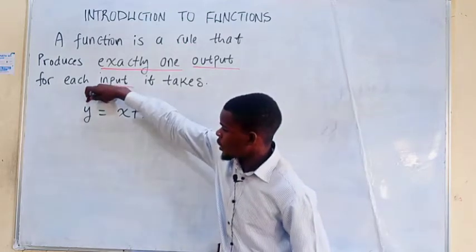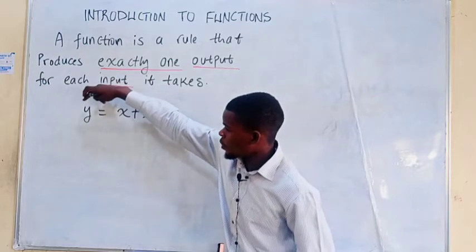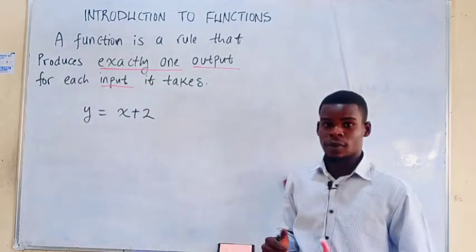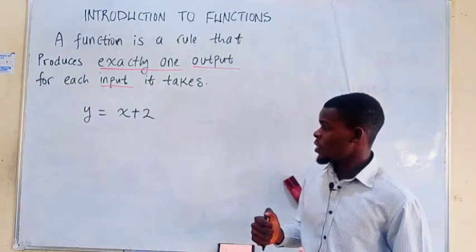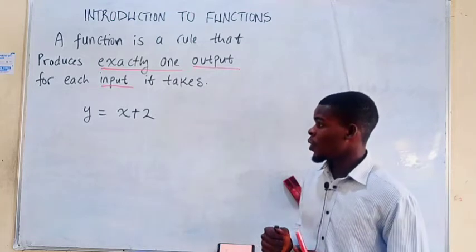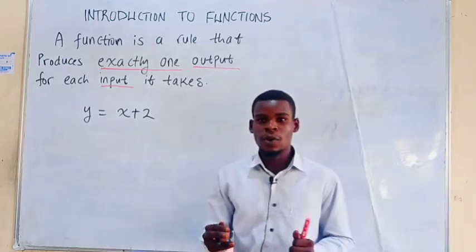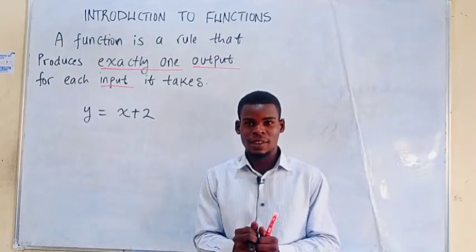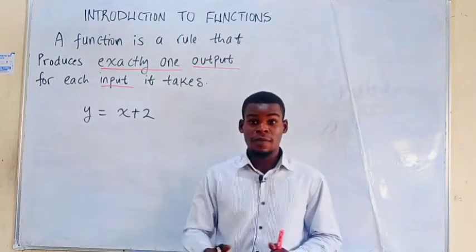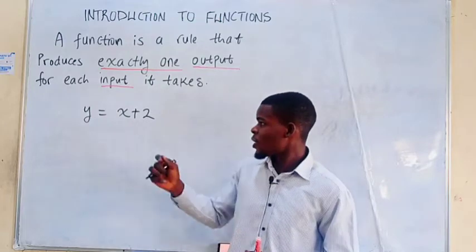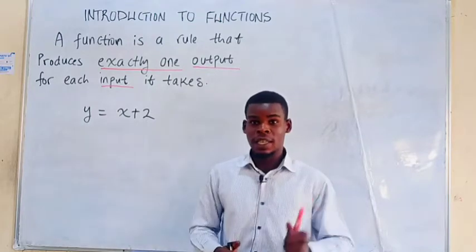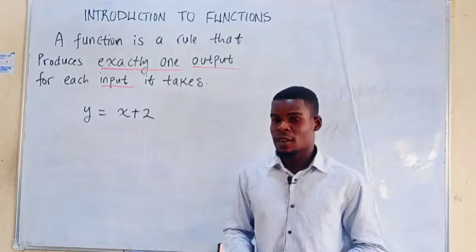Now, first thing I want you to notice is that these two things, y and x, they are variables. And x is called the independent variable while y is called the dependent variable. Reason being that, when we are given a value of x, we plug that in here, we can get a value for y. So that means that the values of y will be depending on that of x.